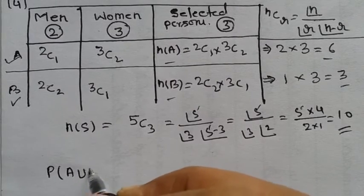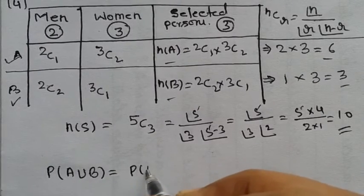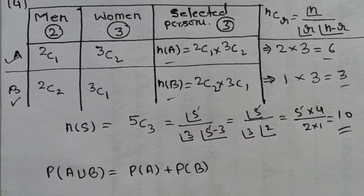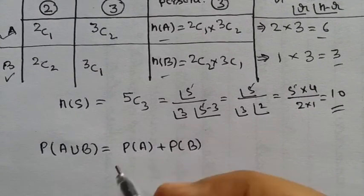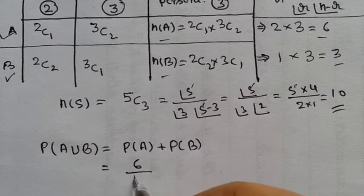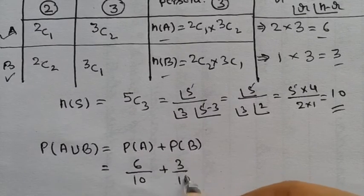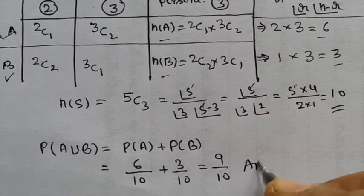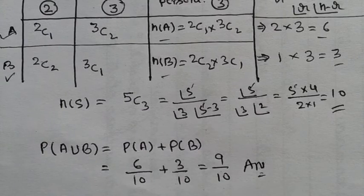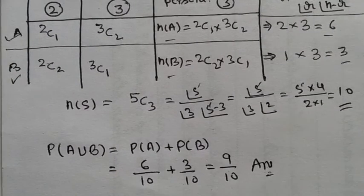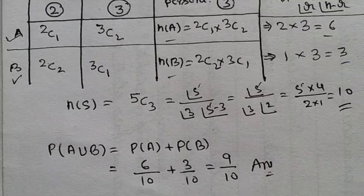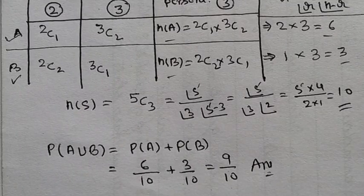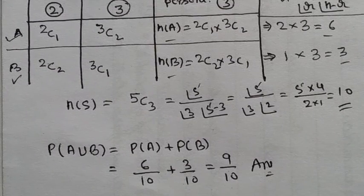Since events A and B are mutually exclusive, P(A union B) = P(A) + P(B). P(A) = 6/10 and P(B) = 3/10. So P(A union B) = 6/10 + 3/10 = 9/10. This is the total probability. Question number 4 is an important question — please practice it. The 5th question will be covered in the next video.